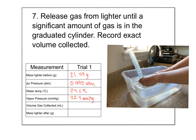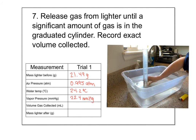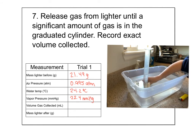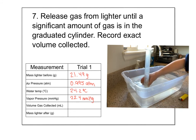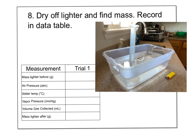Almost done. Taking out the lighter and reading the graduated cylinder — it's inverted so we're reading it backwards — I can see about 55 to 57 milliliters collected. I'll record that as 57.0 mL.